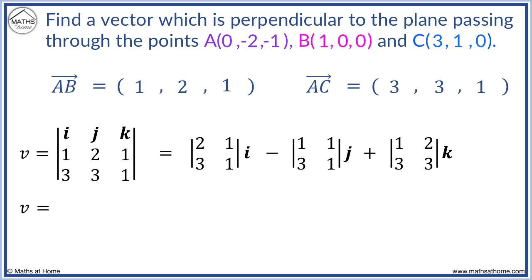Multiplying the top left and bottom right values, then subtracting the top right multiplied by the bottom left. For i, we have 2 minus 3.